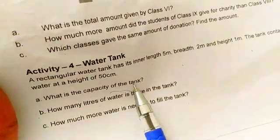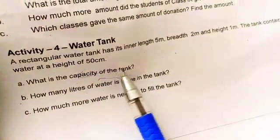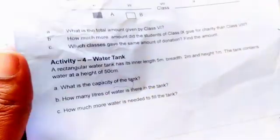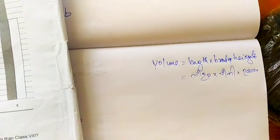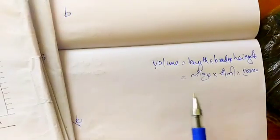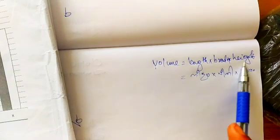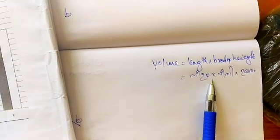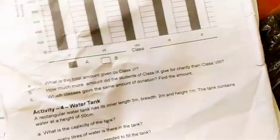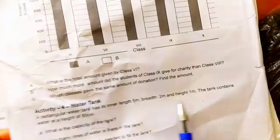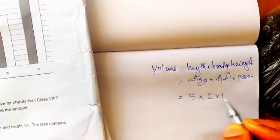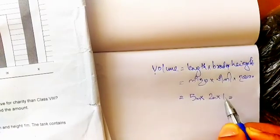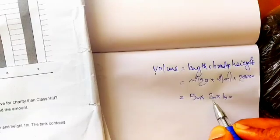What is the capacity of the tank? We calculate the capacity with length, width, and height of the tank. The dimensions are 5 meters, 2 meters, 1 meter. So we get 5 × 2 × 1 = 10 cubic meters.